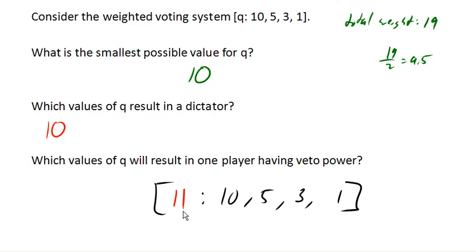If we had a quota of 11, then player 1 and player 2 could reach quota, player 1 and player 3 could reach quota, player 1 and player 4 could reach quota, but player 1 is essential here. Player 1 has to be in the coalition in order for it to reach quota. So in this case, 11 will result in only one player having veto power.